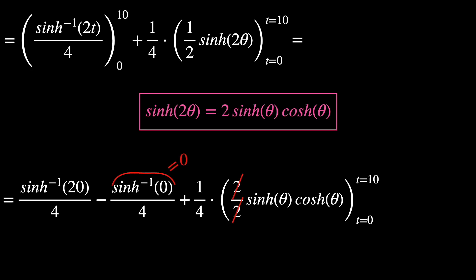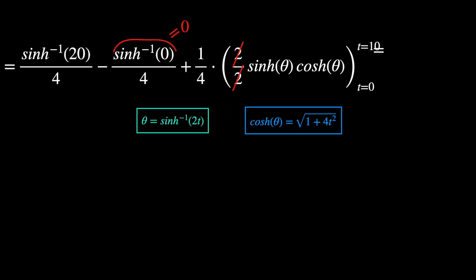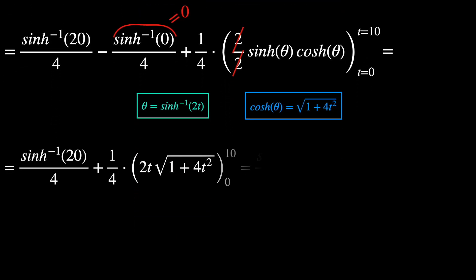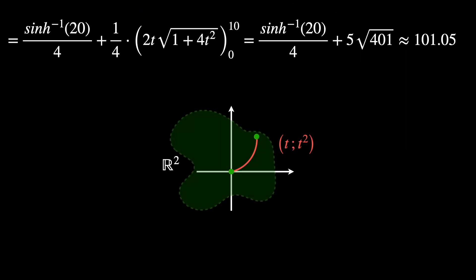Next, we notice that the hyperbolic sine of 0 is 0. We cancel out these 2's in the second term. And we use once again the two facts that we have found. In other words, the expression of theta in terms of T and vice versa. After updating these results, we finally get this approximation: 101.05. And this is the approximate length of the path T, T squared in R2.